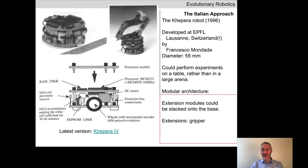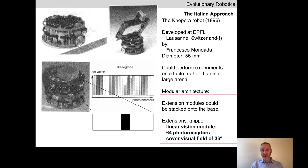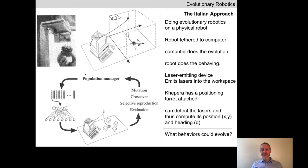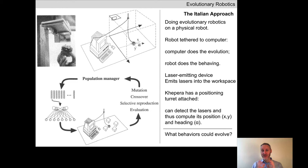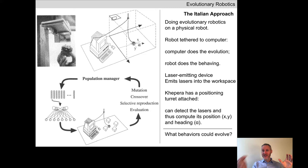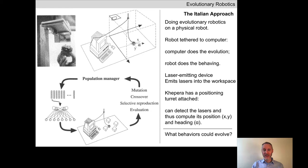We started by looking at the Khepera robot, which is about the size of a hockey puck. We saw how we can add grippers or simple visual systems to the Khepera. We ended last time by describing the experimental setup for the first physical evolutionary robotics experiment: a little Khepera sitting on a table attached by cable to a computer. The computer evolves a population of neural networks, downloads each one onto the robot, observes the behavior, computes a fitness value, and sends that number back to associate with the neural network. Very simple.